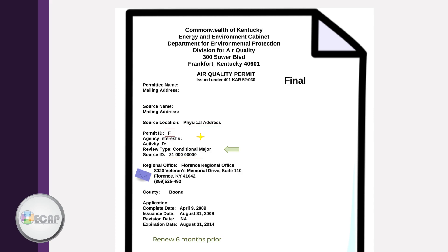The agency interest number is a good number to memorize or at least have handy. The review type is the type of source you are — whether that be minor, conditional major, Title V, or more. Source ID is a 10-digit number that starts with 21. The regional office and contact information is the address you send the annual compliance certifications (ACC) and semi-annual monitoring reports (SAMRs) to. Keep in mind the location could have moved since the permit was issued.